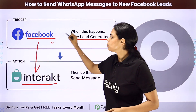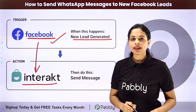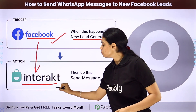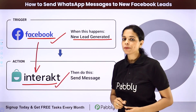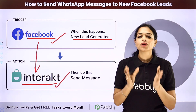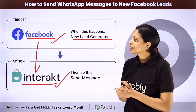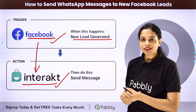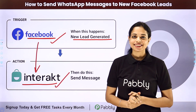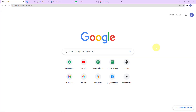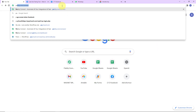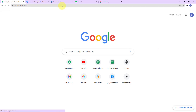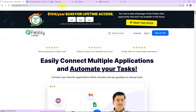Your trigger application would be Facebook lead ads and your action application would be Interact. To integrate and automate this entire process, let me take you to my screen. We are first going to type the URL pabbly.com/connect, and here we have reached the landing page of this software.